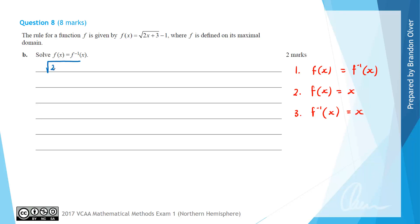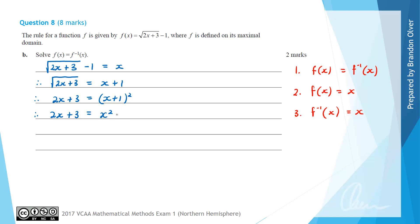We will solve f(x) equals x, so the square root of 2x plus 3 subtract 1 equals x. Adding 1: the square root of 2x plus 3 equals x plus 1. Squaring both sides: 2x plus 3 equals (x+1)². Expanding the right side: 2x plus 3 equals x² plus 2x plus 1. Rearranging to get a quadratic equal to zero: x² minus 2 equals 0. Therefore x equals plus or minus the square root of 2.